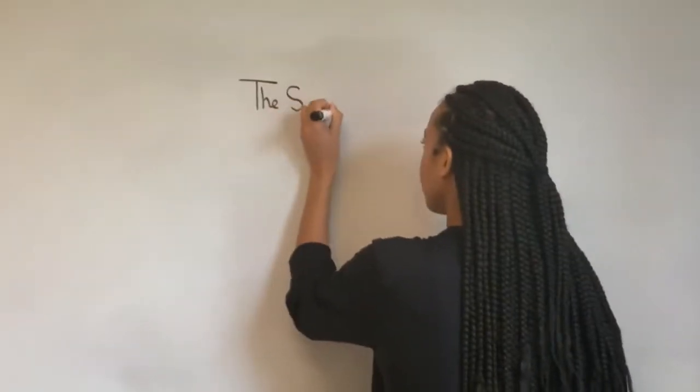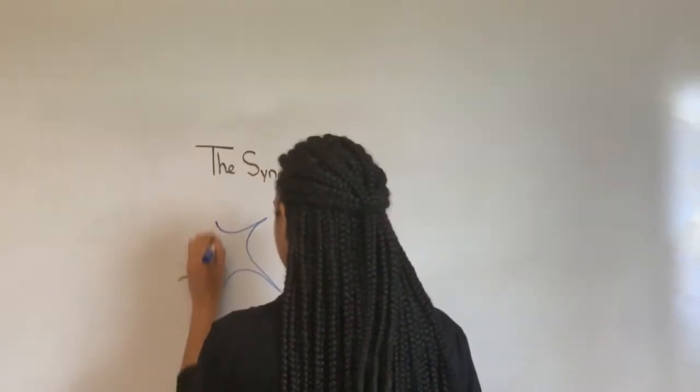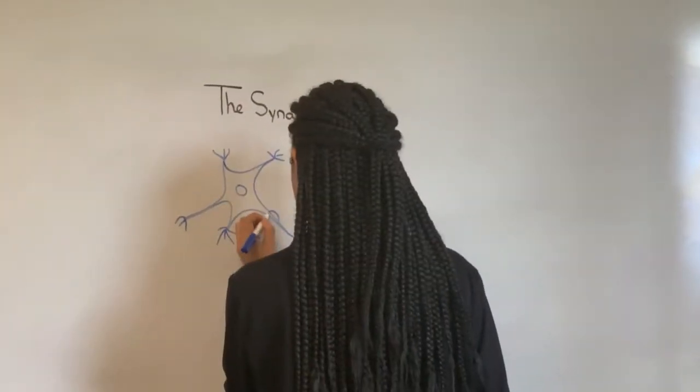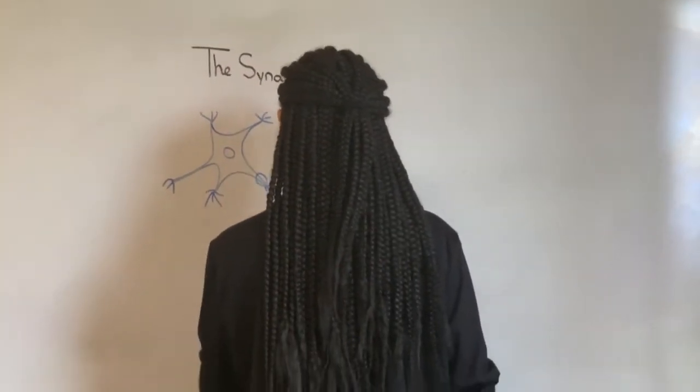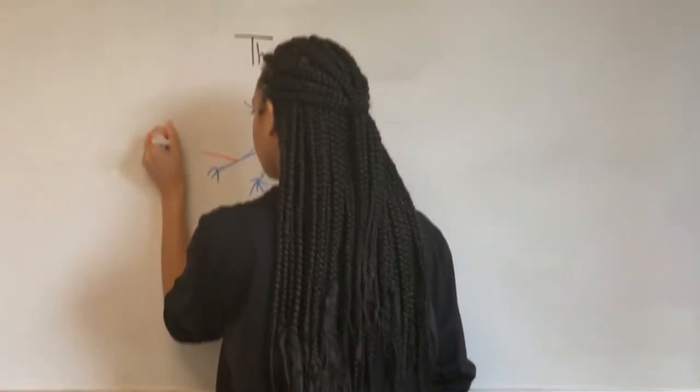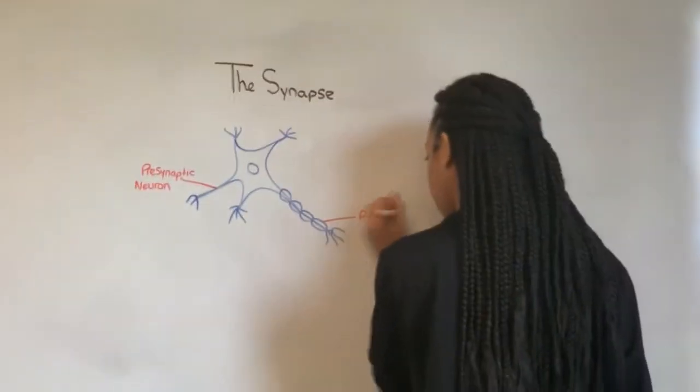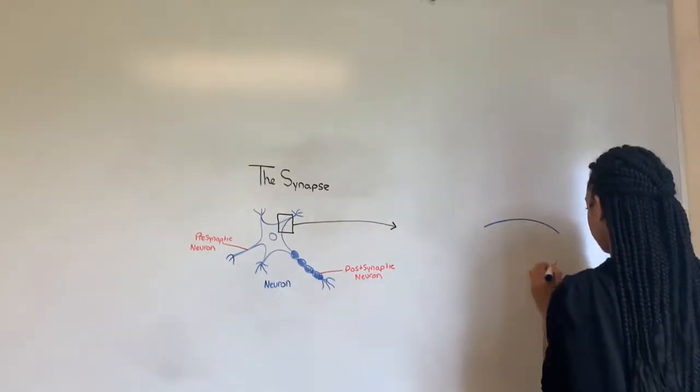The synapse. A synapse is a junction that mediates information transfers from one neuron to another effector cell. The neuron conducting impulses toward the synapse is the presynaptic neuron. The neuron transmitting the electrical signal away from the synapse is the postsynaptic neuron. One sends while the other receives.